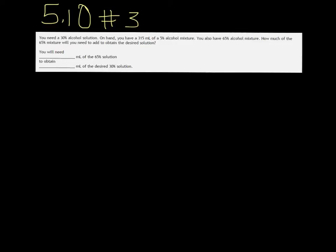Alright, you need a 30% alcohol solution. On hand you have 315 milliliters of 5% alcohol mixture and you also have 65% alcohol mixture. So you're going to mix them together. You need to know how much of the 65% you need to add in order to bring that 5% mixture up to 30%.